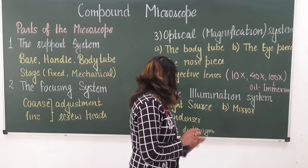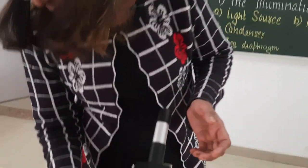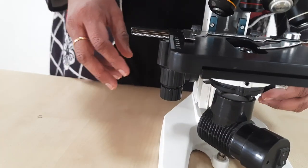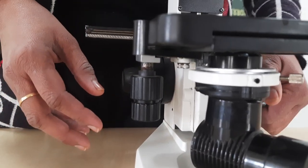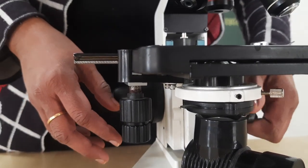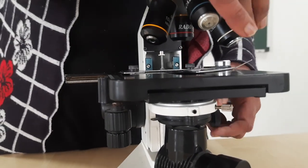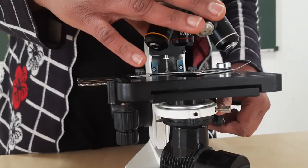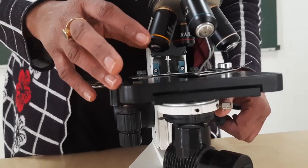Below the stage there is a structure called the condenser, also known as the sub-stage condenser, which moves up and down. When using the 10x objective, the condenser should be in the lowest position; when using 40x, it should be in the middle position.